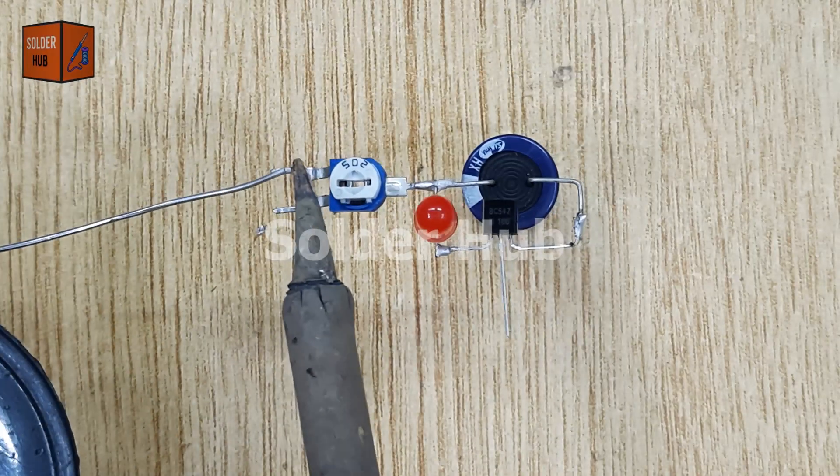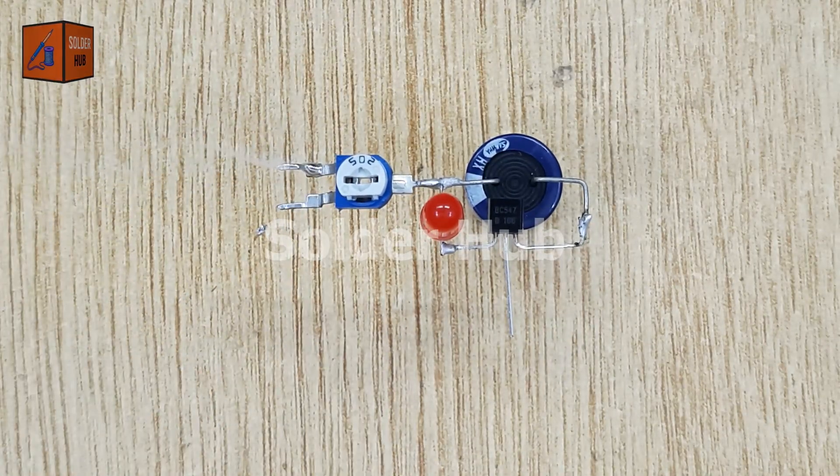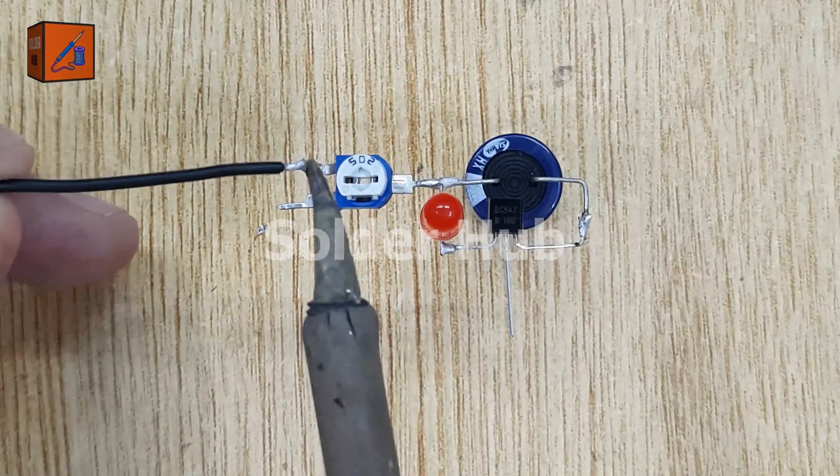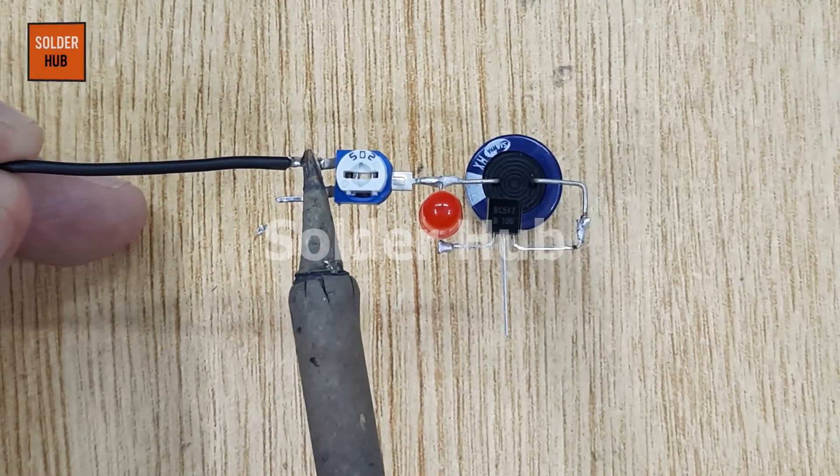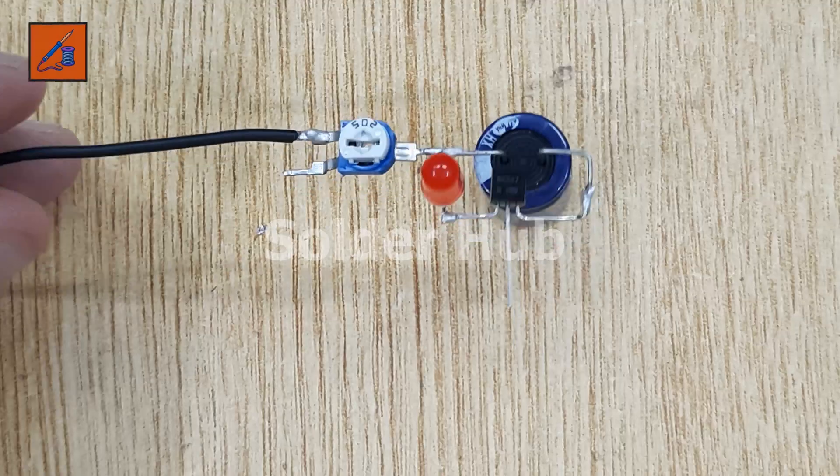Next, I solder the ground pin of the potentiometer to the negative terminal of a 12-volt battery, completing the control loop. This ensures the potentiometer can correctly regulate the base voltage of the transistor.